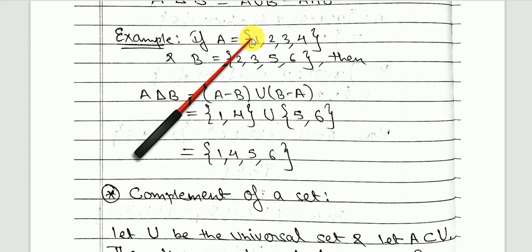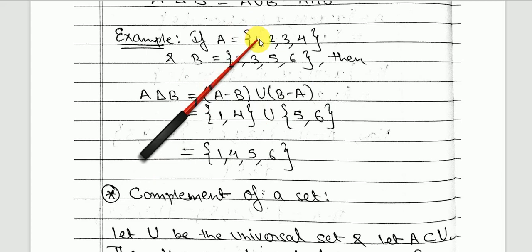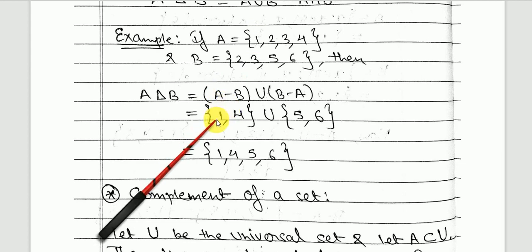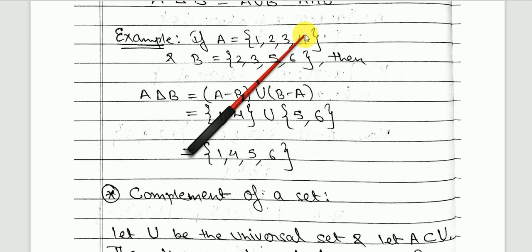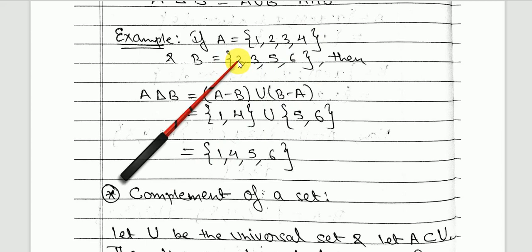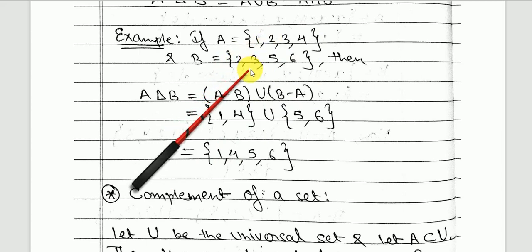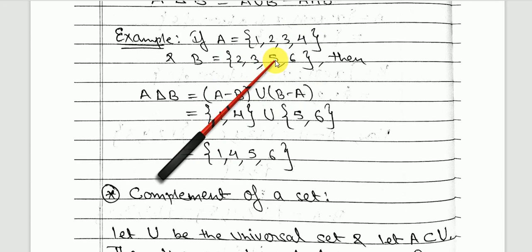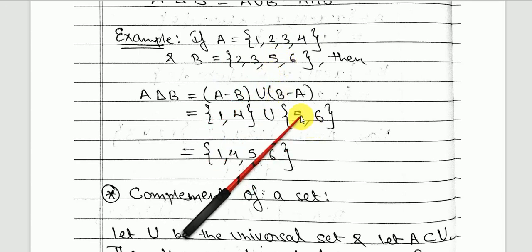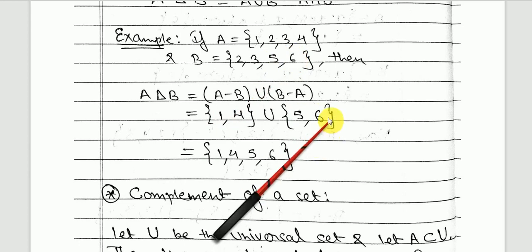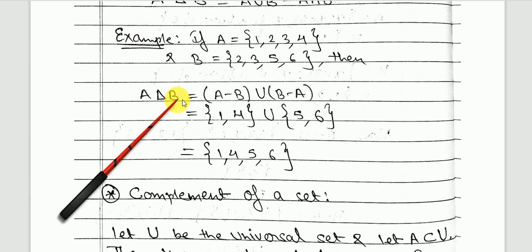For example, A = {1, 2, 3, 4} and B = {2, 3, 5, 6}. A minus B: 1 is only in A, 4 is only in A, so A minus B = {1, 4}. B minus A: 5 is only in B, 6 is only in B, so B minus A = {5, 6}. Taking the union, the symmetric difference A △ B = {1, 4, 5, 6}.